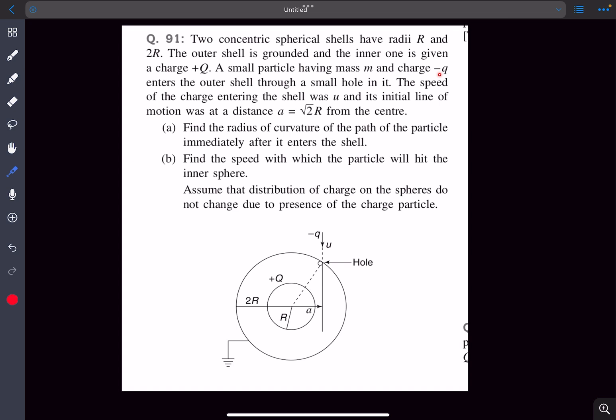A small particle having mass m and charge minus q enters the outer shell through a small hole in it. The speed of the charge entering the shell was u and its initial line of motion was at a distance of a from the center.